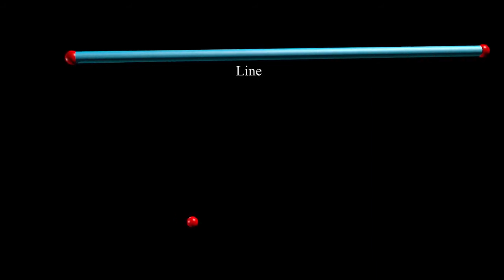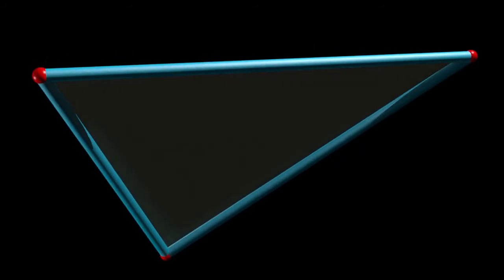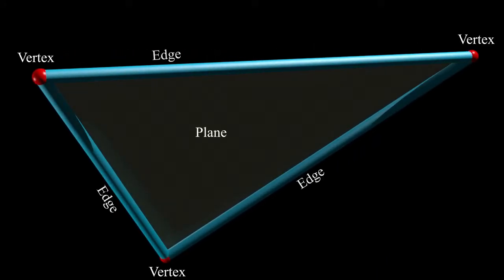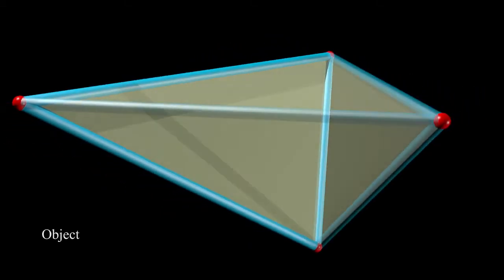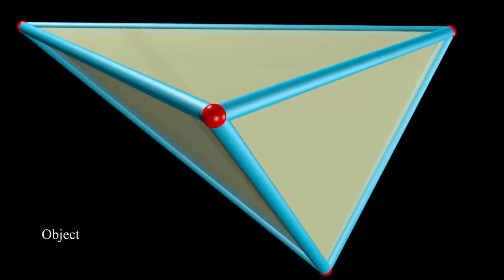Here we have a point. As we add a second point, we get a line. By adding a third point, we get a plane, where those points become vertexes and the lines become edges. By adding a fourth point, we now get an object, and that plane turns into a face.